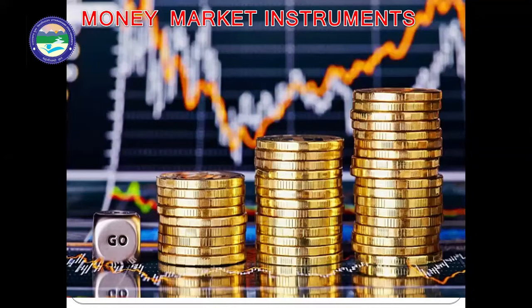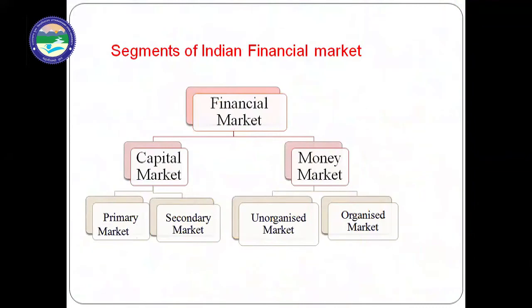In our previous session of Financial Market, we discussed that Financial Market has two segments: Capital Market and Money Market. Capital Market is a market where securities are issued to raise long-term funds. Securities means financial securities such as equity shares, preference shares, debentures, and bonds. And Money Market is a market where funds are raised for short-term.